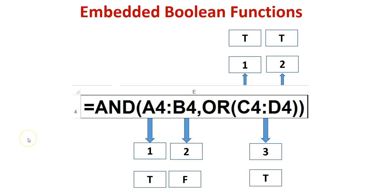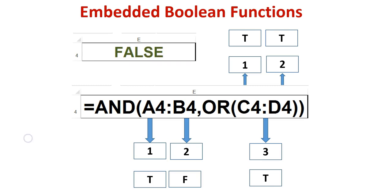In this AND function, the first argument evaluates to true, the second argument evaluates to false, and the third argument evaluates to true. Therefore, the entire AND function evaluates to false.